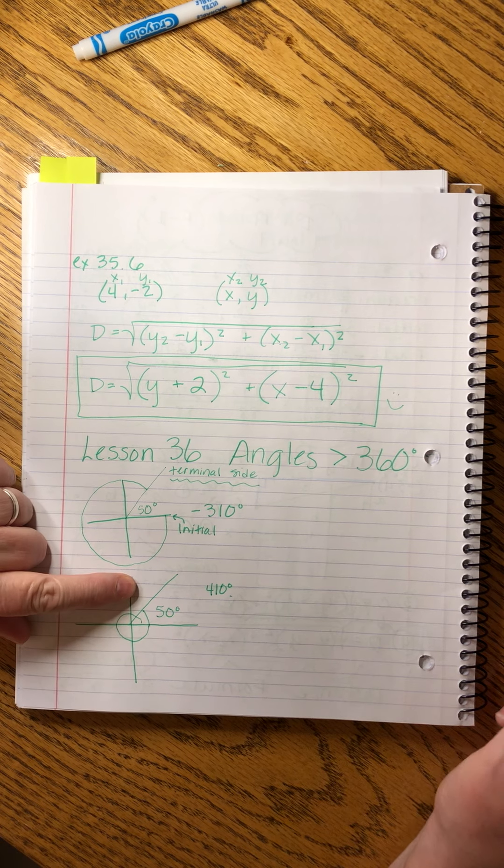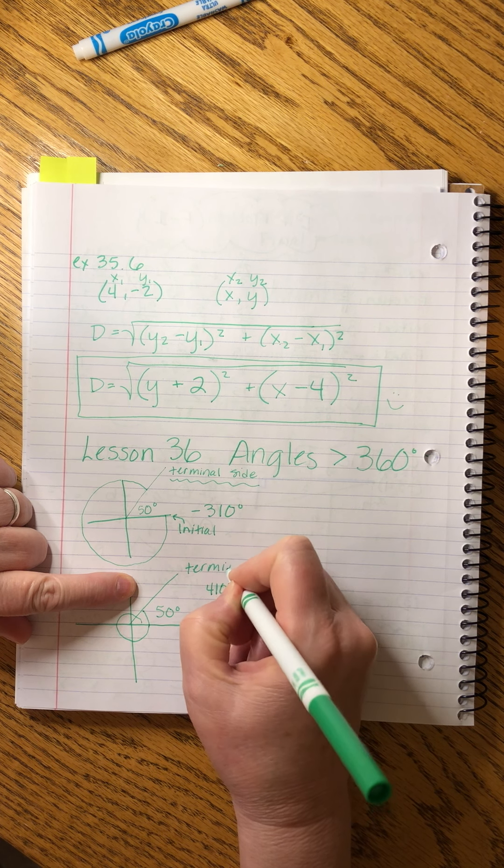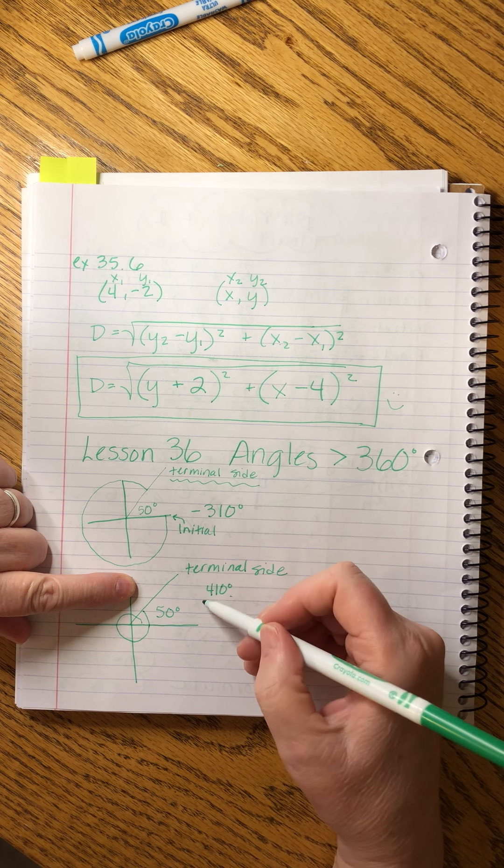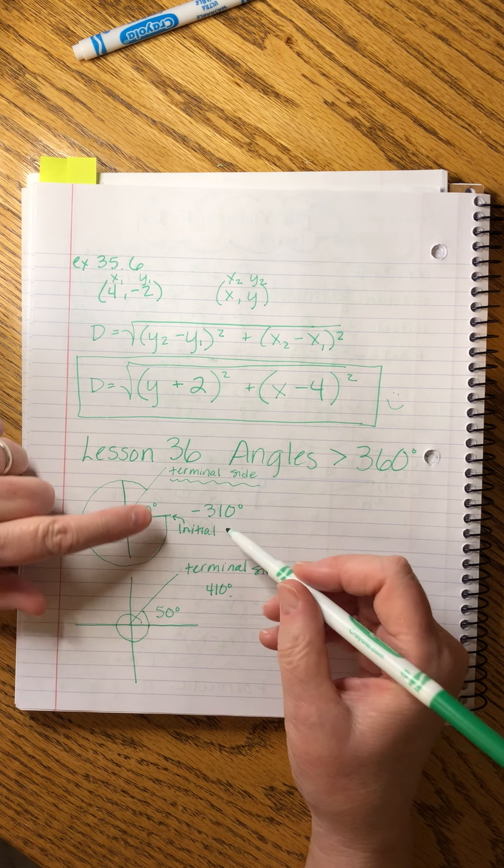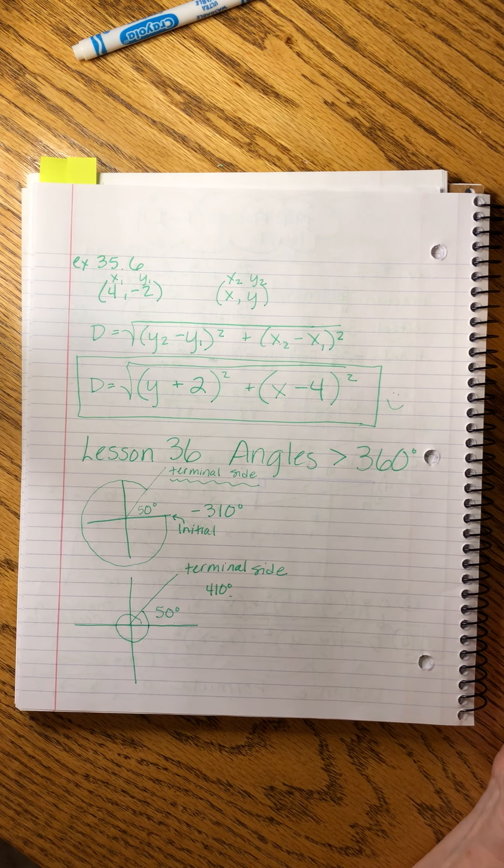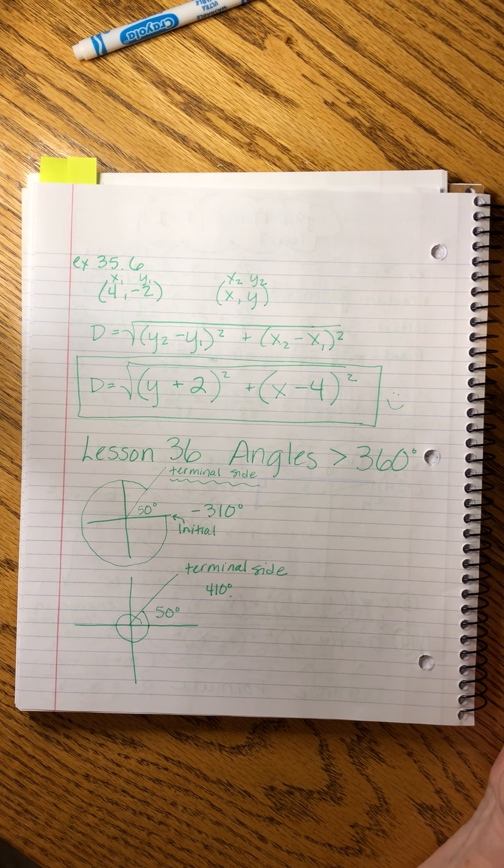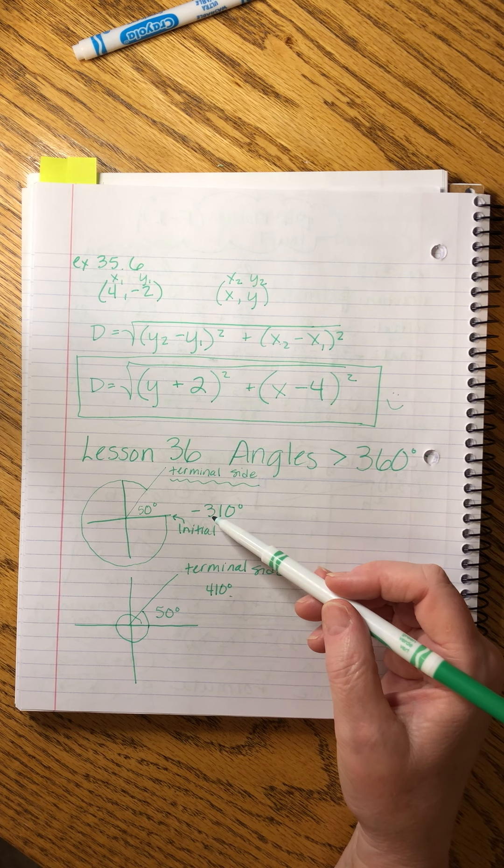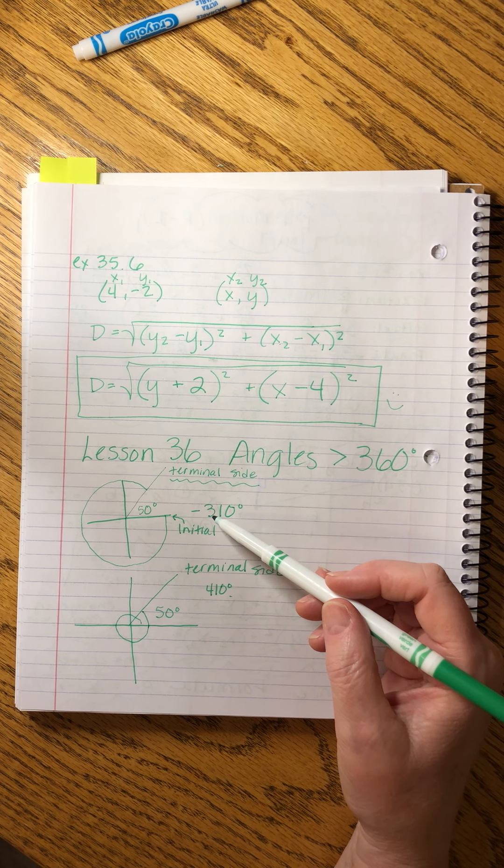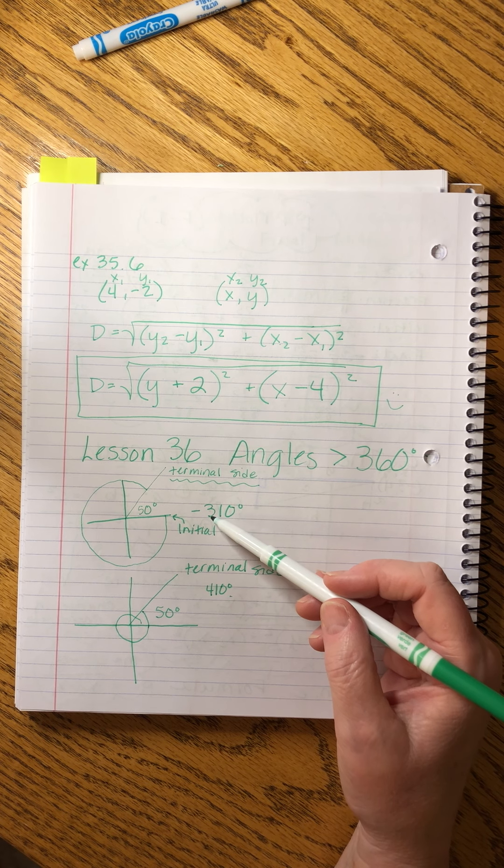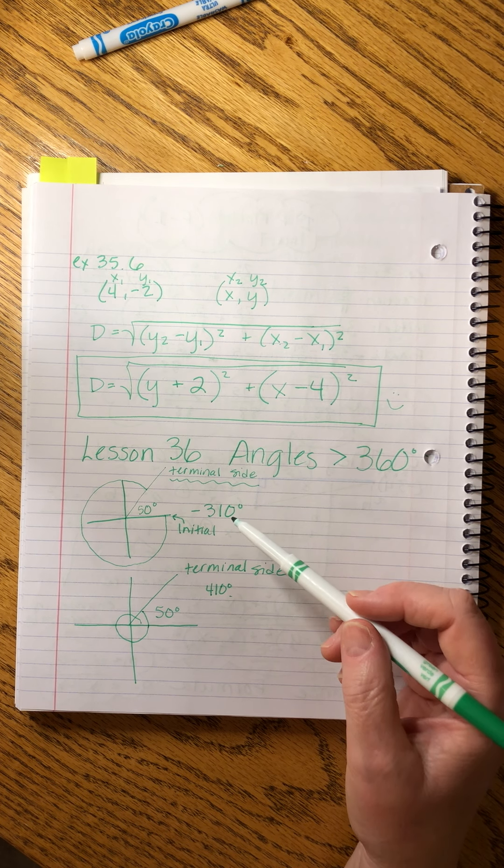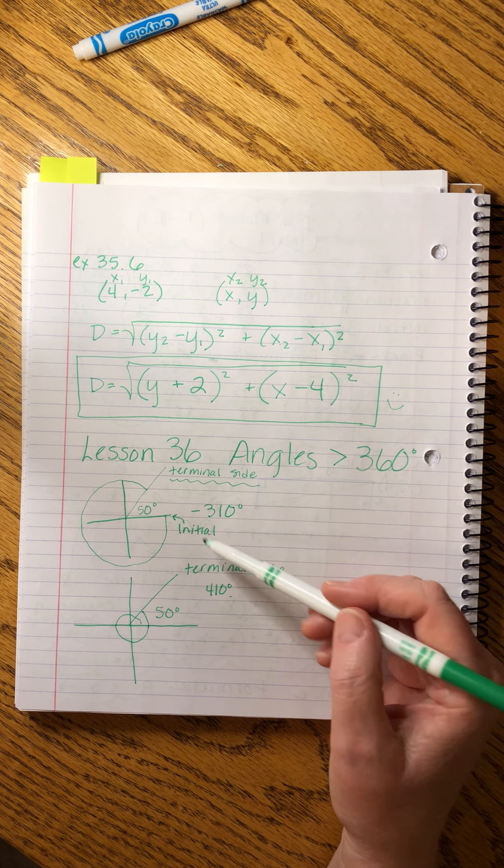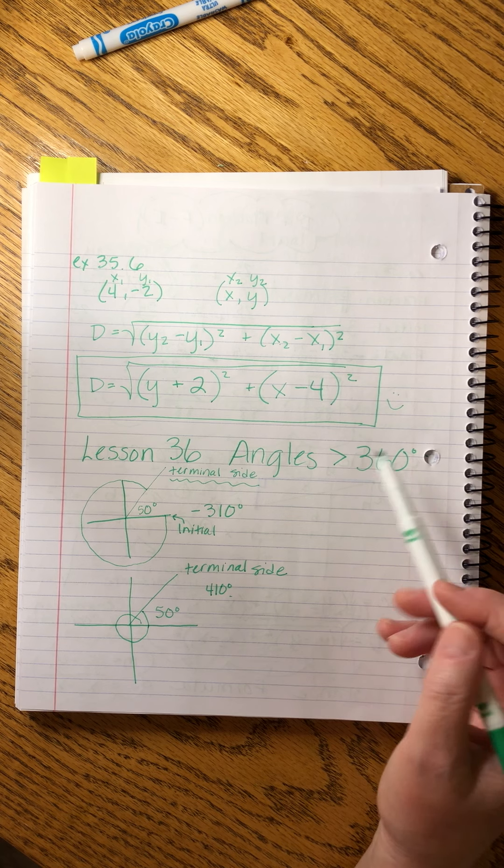So what that means is that the terminal side of this 410 degree angle is the same as the terminal side of the minus 310. So what we're learning is that the number of degrees in the angle as we're given them is just kind of like directions to find the actual angle.